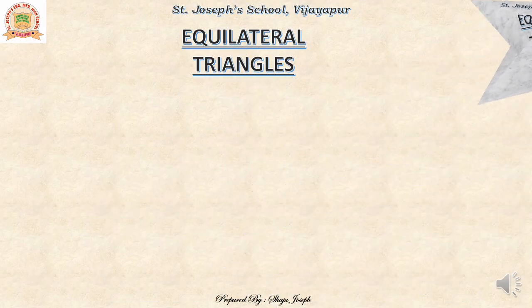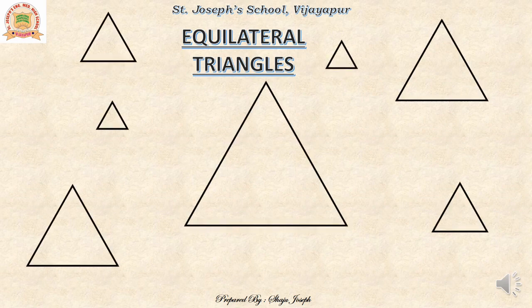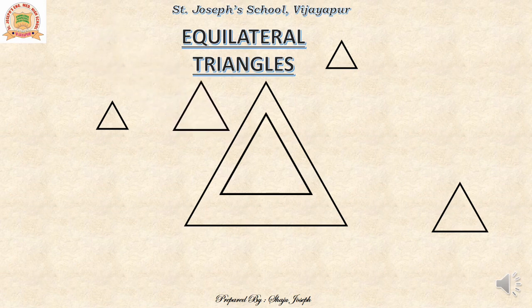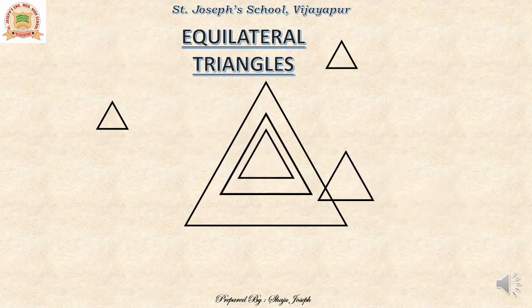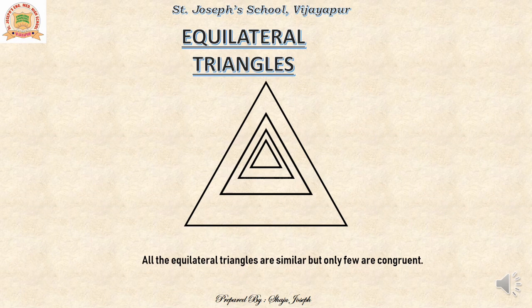Let us take a few more examples with equilateral triangles — a big triangle and a few more smaller triangles. When placed on each other, some of them merge and are congruent, and some of them are not congruent. So all the equilateral triangles are similar in shape but only few are congruent. If anyone asks: are congruent equilateral triangles similar to each other? Yes, of course. But are all similar equilateral triangles congruent? No — some of them may be, and some of them aren't.